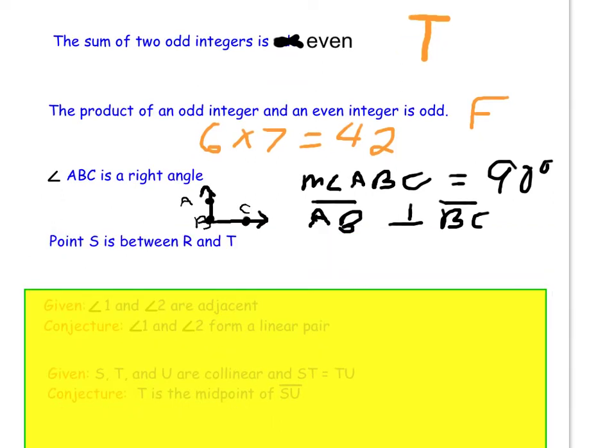Now I have the conjecture that point S is between R and T. Draw the figure of S between R and T, and make a conjecture based on that figure. So here is my figure, S is between R and T. A conjecture might be that distance RS plus distance ST equals distance RT. If you remember segment addition from chapter 1 from back about a week ago.